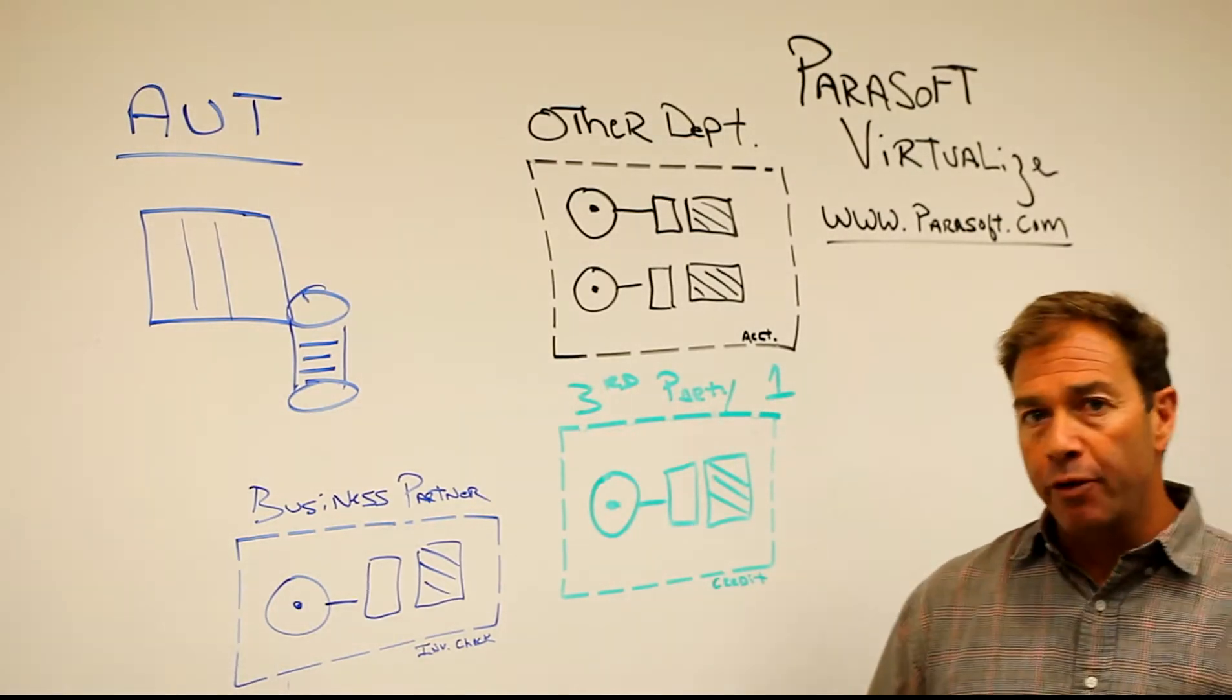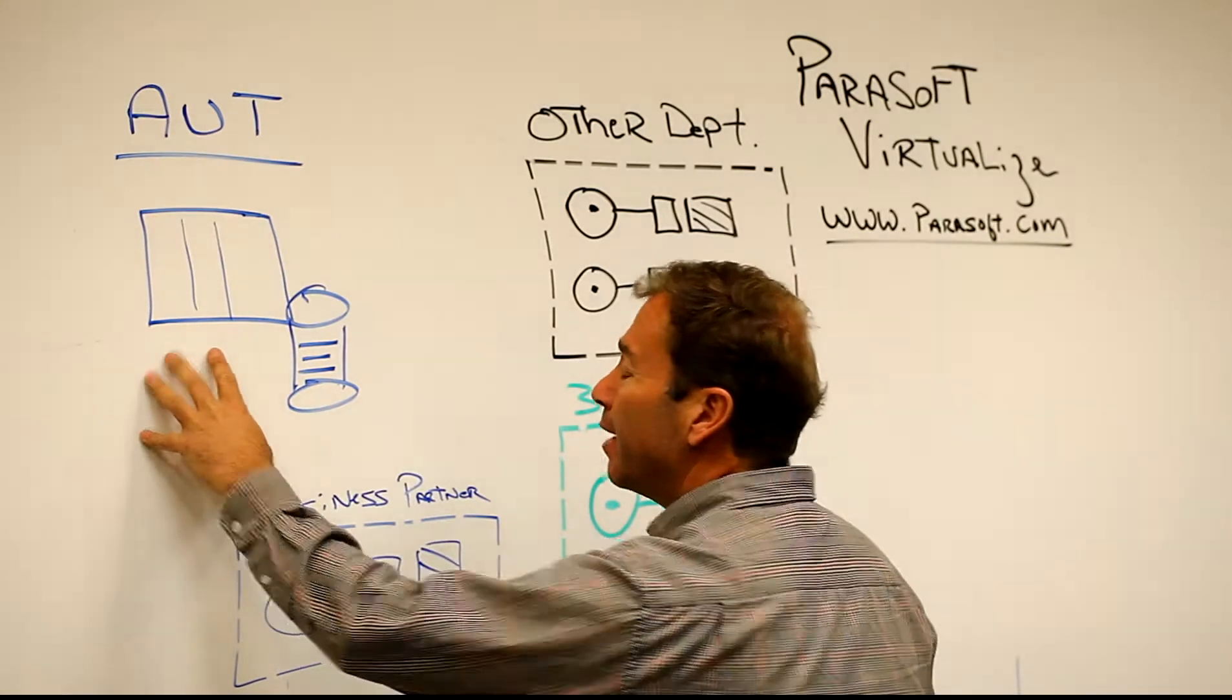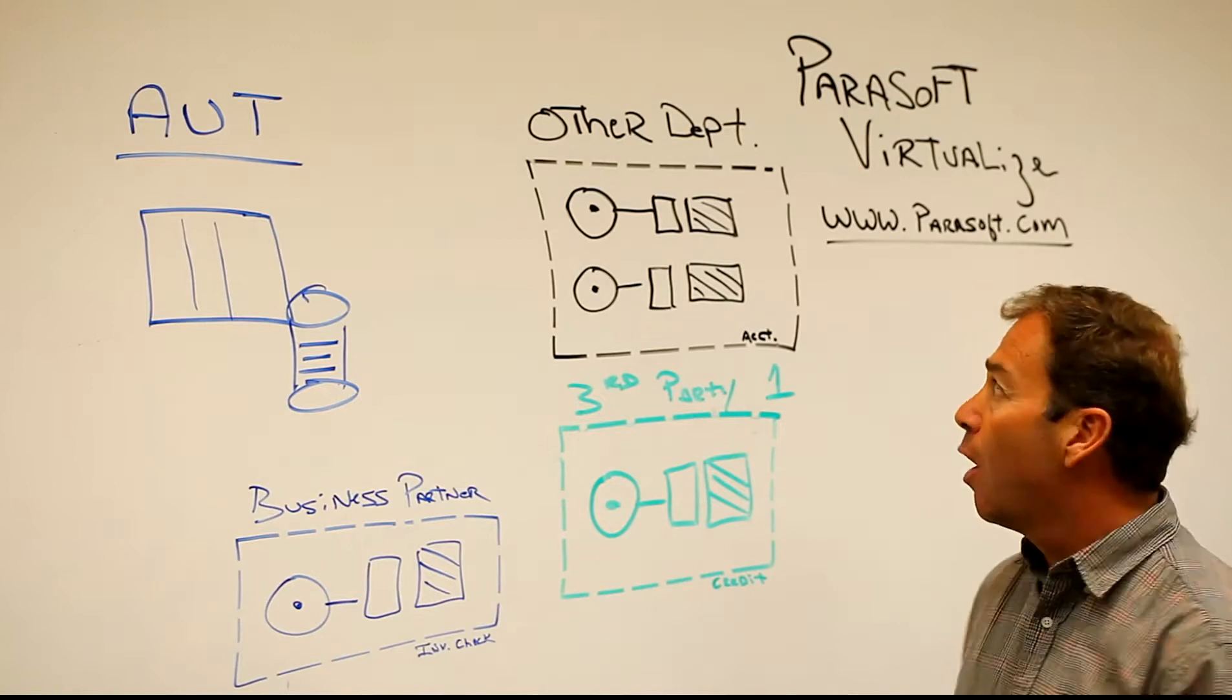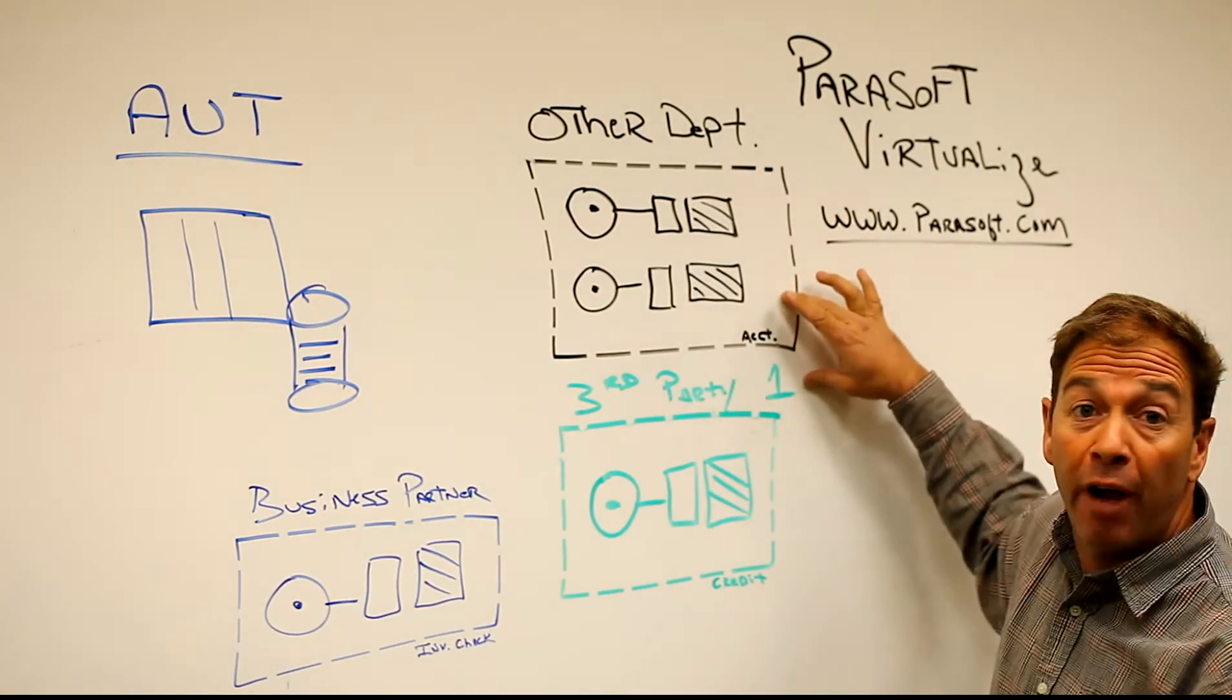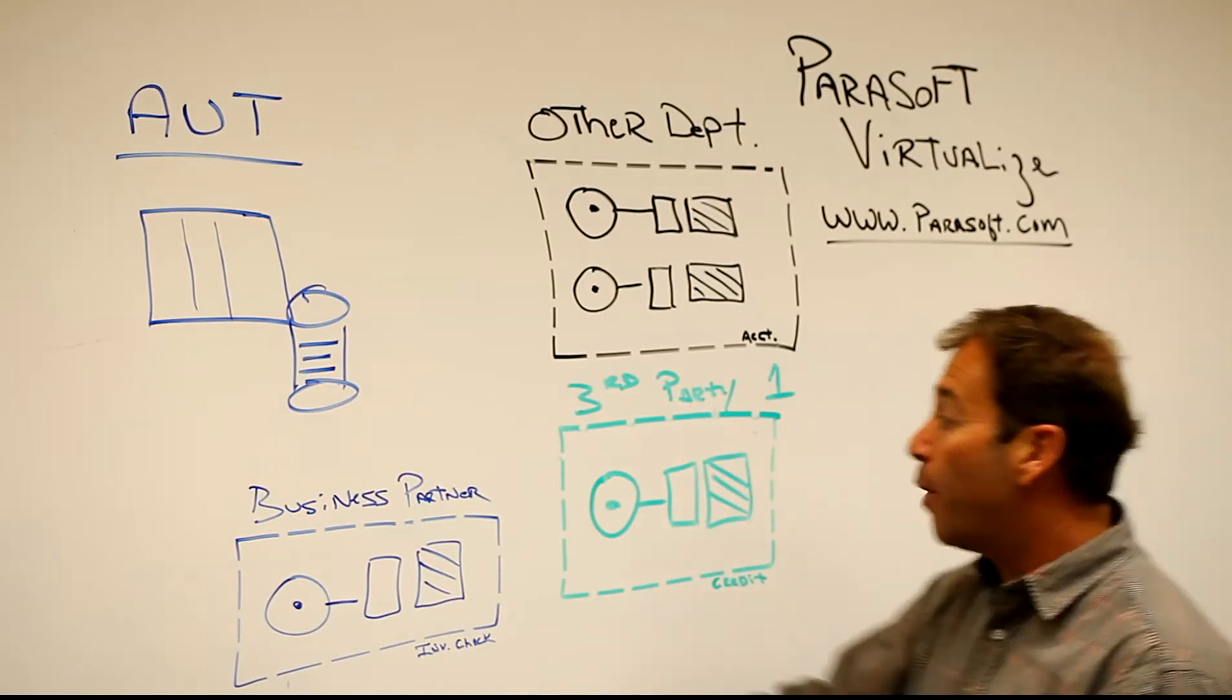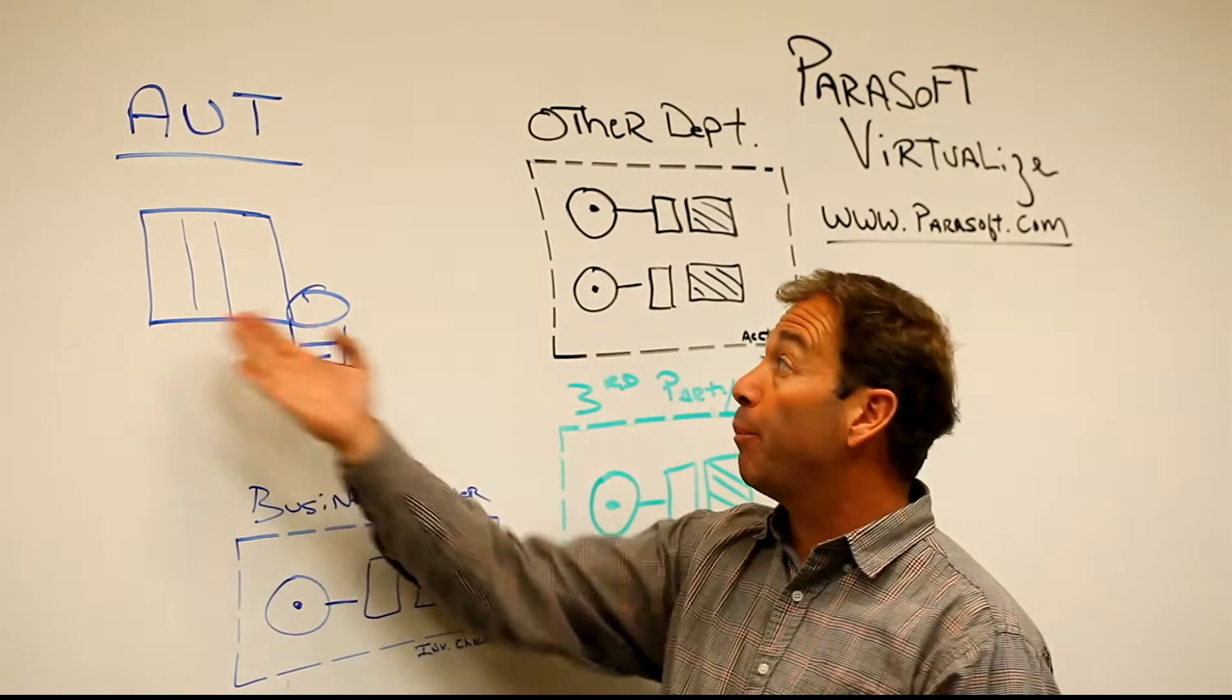With many of our Parasoft customers, what we're finding today is that their application under test, especially with service-oriented or composite applications, are dependent on many other systems that are out of their control. Maybe it's another department that runs the accounting or finance system, or a third-party system that does credit checks, or perhaps a business partner who supplies inventory information to your application under test.